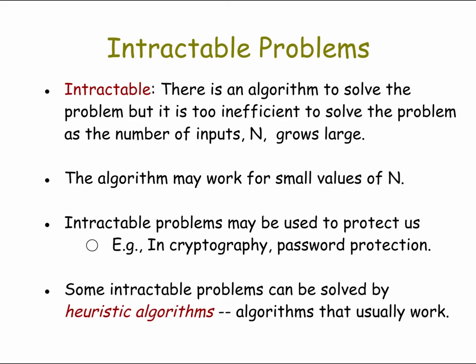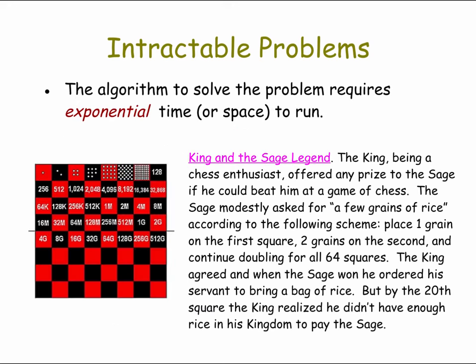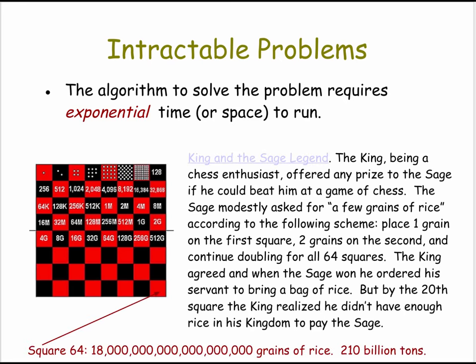Heuristic algorithms work in many cases, but are not guaranteed to work in all cases. Typically, an intractable problem is one for which the algorithms all require an exponential amount of time or space. To give you a sense of how inefficient that is, consider this story: a king agrees to pay his sage one grain of rice on the first square, two on the second, four on the third — doubling on each square. If you carry that out to the end, the king would owe the sage 210 billion tons of rice. The king clearly did not understand the concept of exponential growth.